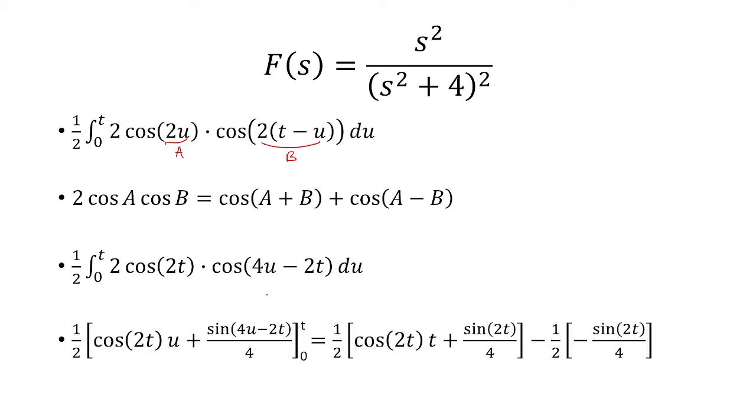Now I can find the antiderivative. So this one I just did quickly because, well, 2 cosine 2t, this is a constant. And the reason is because it doesn't depend on u.